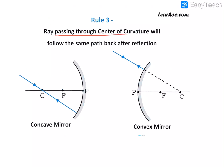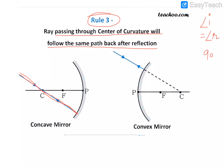Rule number three says: a ray which is passing from the center of curvature will follow the same path after reflection. This is a very important rule — the ray passing from the center of curvature reflects back through the center of curvature. This is because angle of incidence equals angle of reflection. A ray perpendicular to the mirror reflects back at 90°, and a ray at 0° reflects back along the same path.